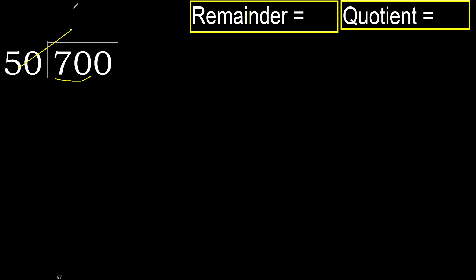50 multiplied by which number is nearest to 70 but not greater? 50 multiplied by 1 is 50, which is not greater. Subtract: 70 minus 50 equals 20.